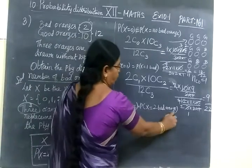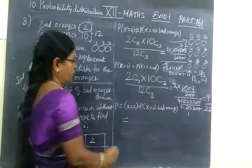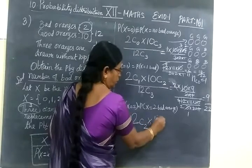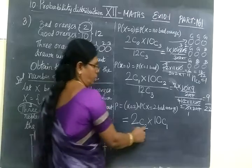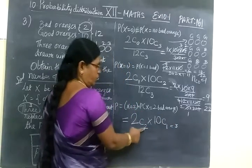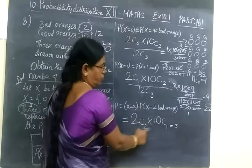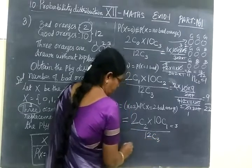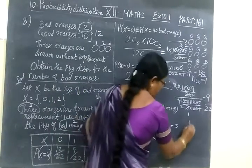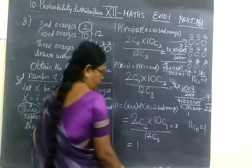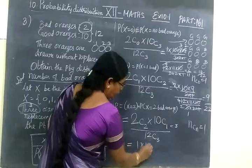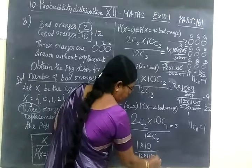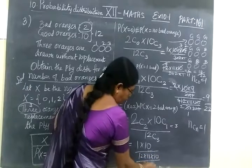Equal to 2 bad oranges. We are selecting 2 bad oranges. So totally 2 C 2 bad oranges, then 10 C 1. Because totally we are selecting 3, out of it 2 numbers of bad oranges, 1 is good. Then by 12 C 3. Equal to 2 C 2 means 1, because N C N equal to 1. So 1 into 10 by 12 into 11 into 10 by 3 into 2 into 1.